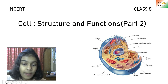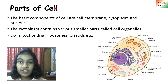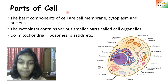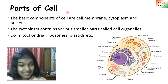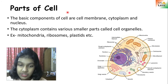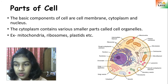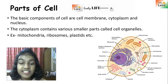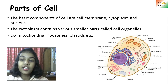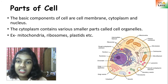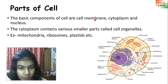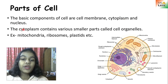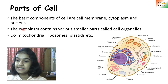In this video we are going to talk about the parts of a cell — what the cell contains and what the parts of the cell are. A single cell is made up of many different parts. The main three parts of a cell are cell membrane, cytoplasm, and nucleus. We're going to learn about all of these in detail.